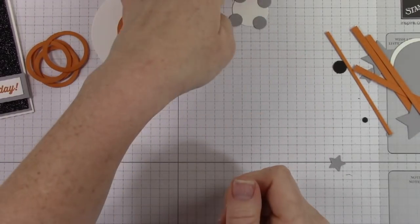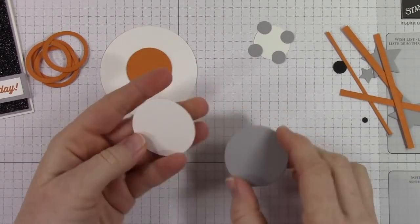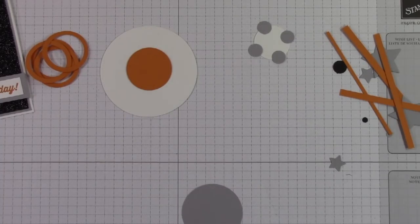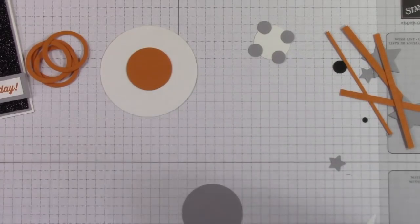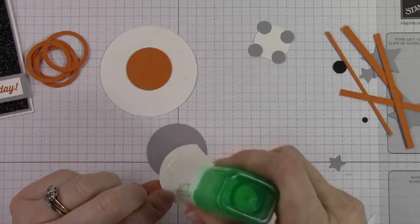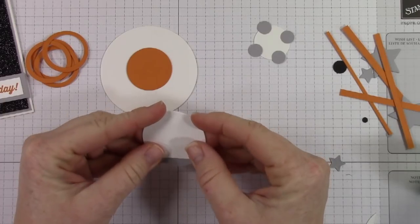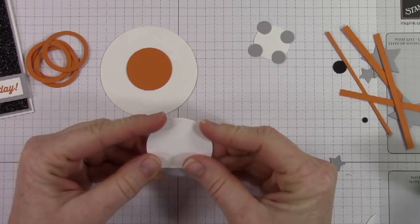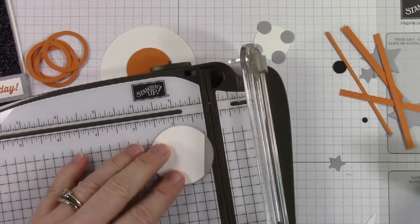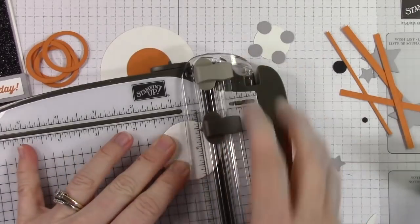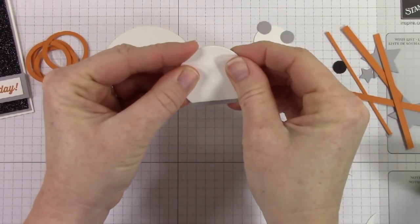So set that aside and let it dry and then I'm going to work on this piece. I've got my, I lied I'm gonna work on his head. Okay so these are from the layering circle framelits and they are one and five eighths inch circles. So if you have something even close to that that would work. I trimmed a little bit off the bottom of the circle and I'm going to layer it on top of the smoky slate circle and then I'm going to trim a little bit off the bottom of the smoky slate circle less than I trimmed off from the whisper white. So I have this little strip if you will of smoky slate sticking out from the bottom.